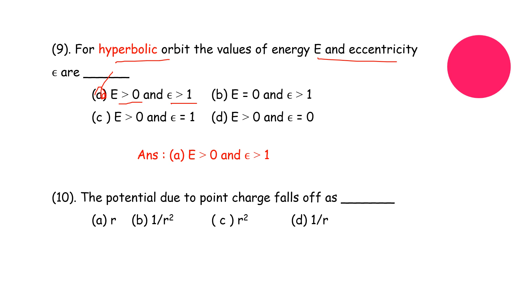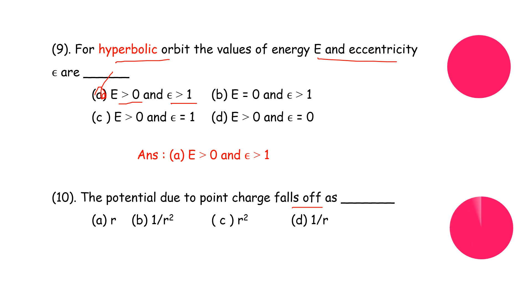The next question: the potential due to a point charge falls off as — what? The correct answer is that the potential falls off as 1/r. Hope you understand; if you have any doubts, put them in the comment box. Thank you, all the best.